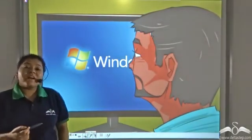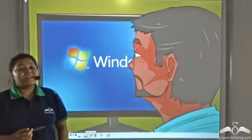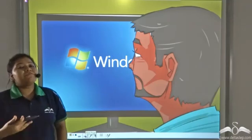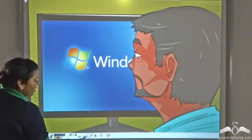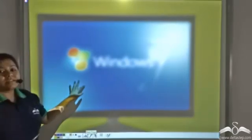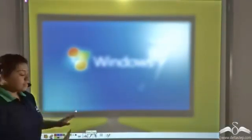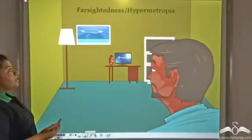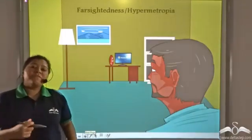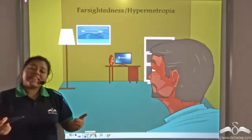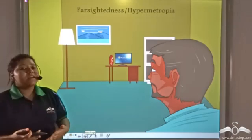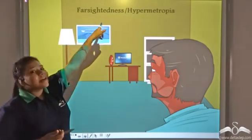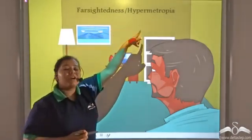Now another condition arises in people after forty years when near objects seem hazy and blurry. This condition when far objects are clear but near objects are hazy and blurry is known as farsightedness or hypermetropia.